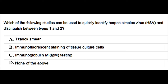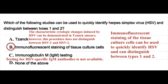Okay, so the correct answer here is B. Immunofluorescent staining of the tissue culture cells can be used to quickly identify HSV and can distinguish between types 1 and 2. The characteristic cytologic changes induced by HSV can be demonstrated in Tzanck smears; however, this procedure does not distinguish between HSV1 and HSV2.